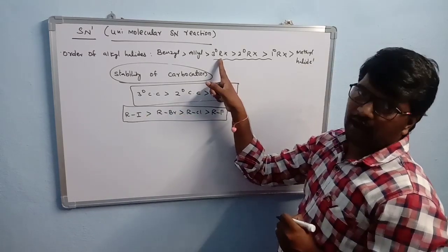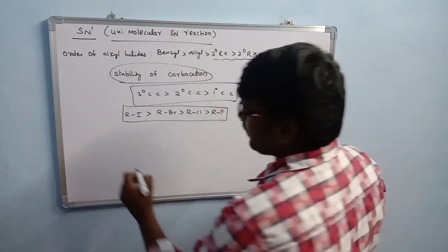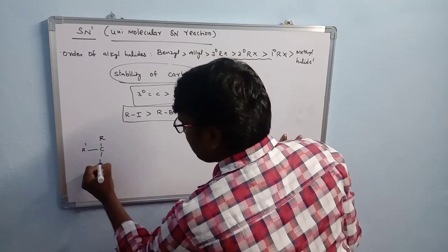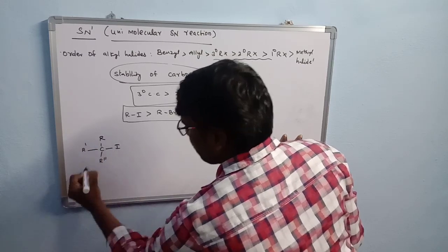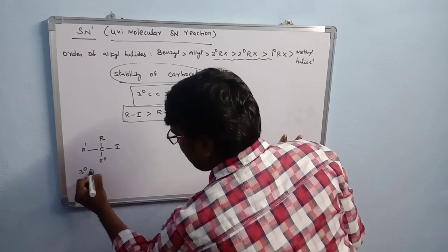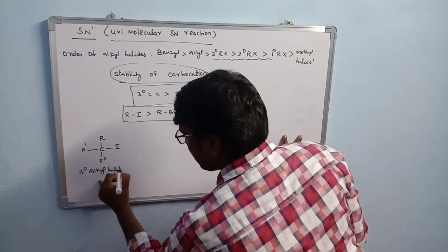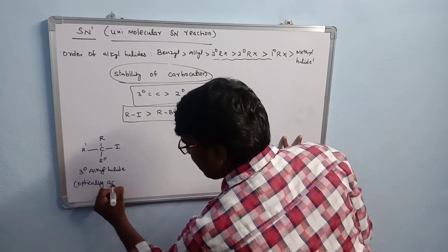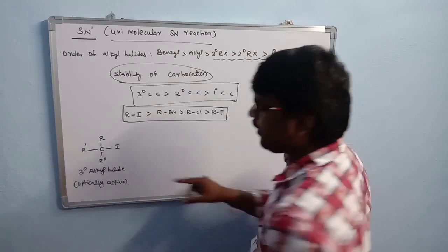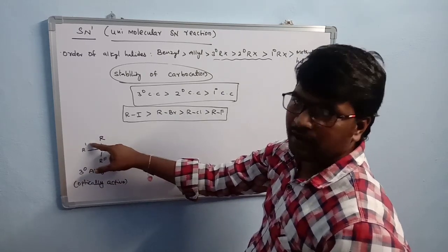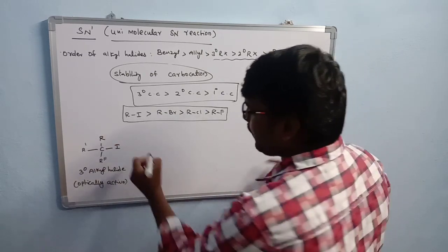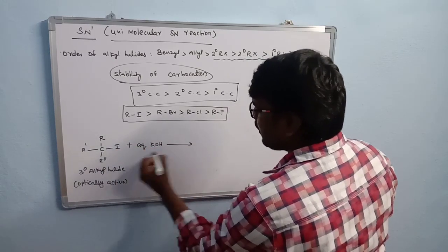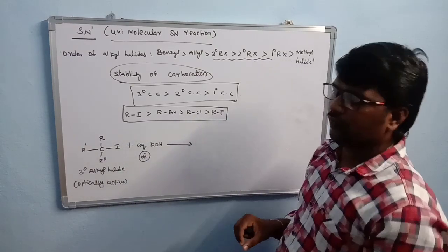Taking a tertiary alkyl halide as an example to explain SN1 reaction: we take R, R', R'', I — a tertiary alkyl iodide. This compound is optically active because three different alkyl groups are present around the central carbon. It reacts with a stronger base — KOH — where OH⁻ acts as the nucleophile.